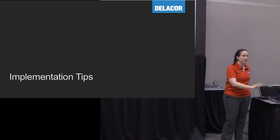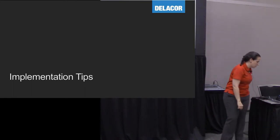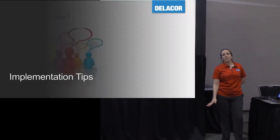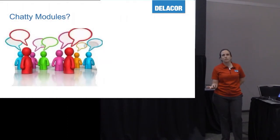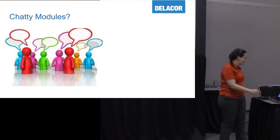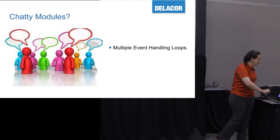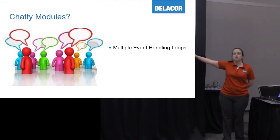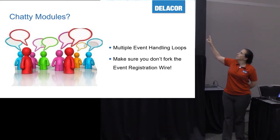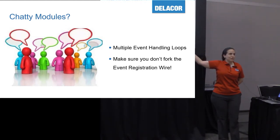Some implementation tips. Do any of you have chatting modules? A chatting module means too many messages, or messages going really fast. How do you solve that? One way is to have multiple event handling loops. If you take nothing else away from this presentation, please take this: do not fork the event registration wire. Because if you fork it, you're going to miss events.